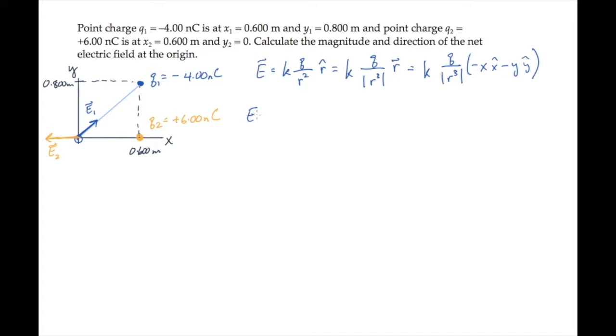The x component of the net electric field is the sum of the x components, which we can write from the equation on the first line. It's proportional to charge 1 divided by r1 cubed times negative x1, plus charge 2 divided by r2 cubed multiplied by minus x2.